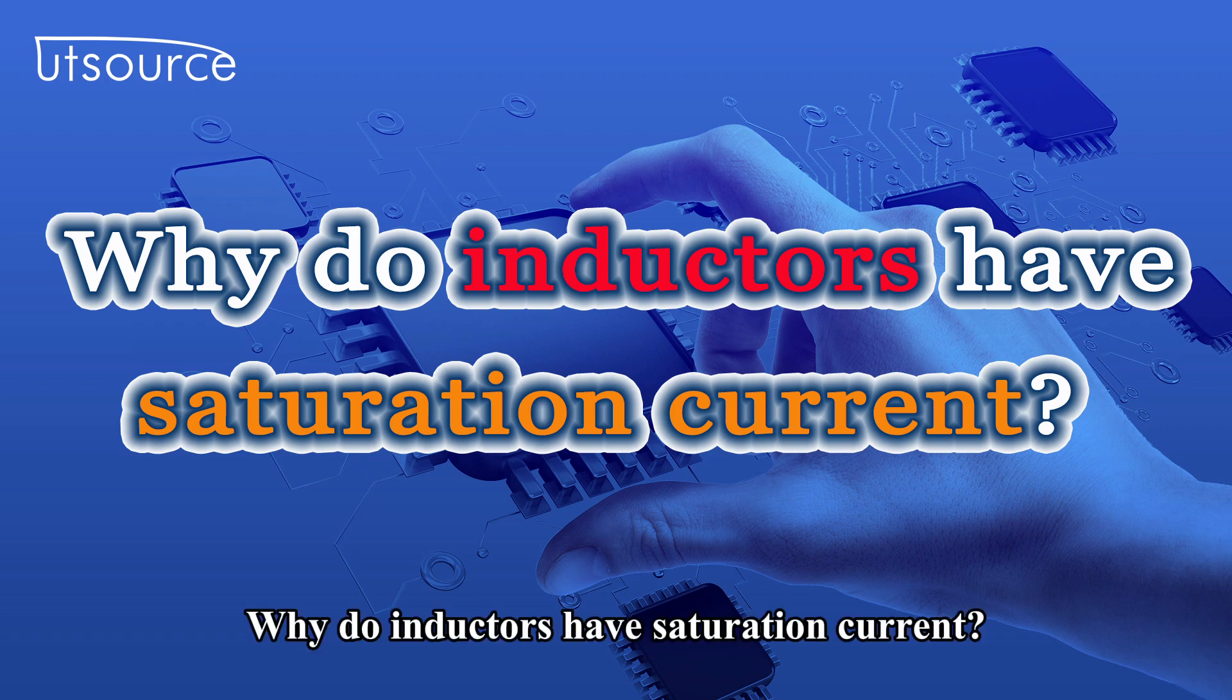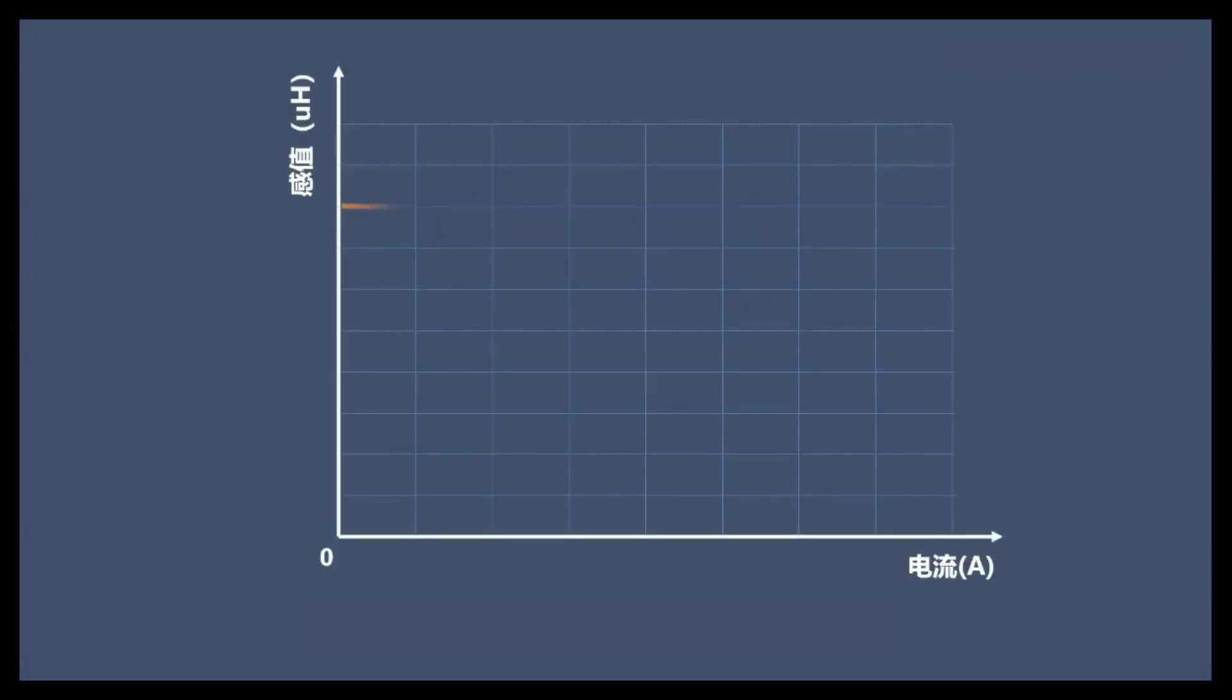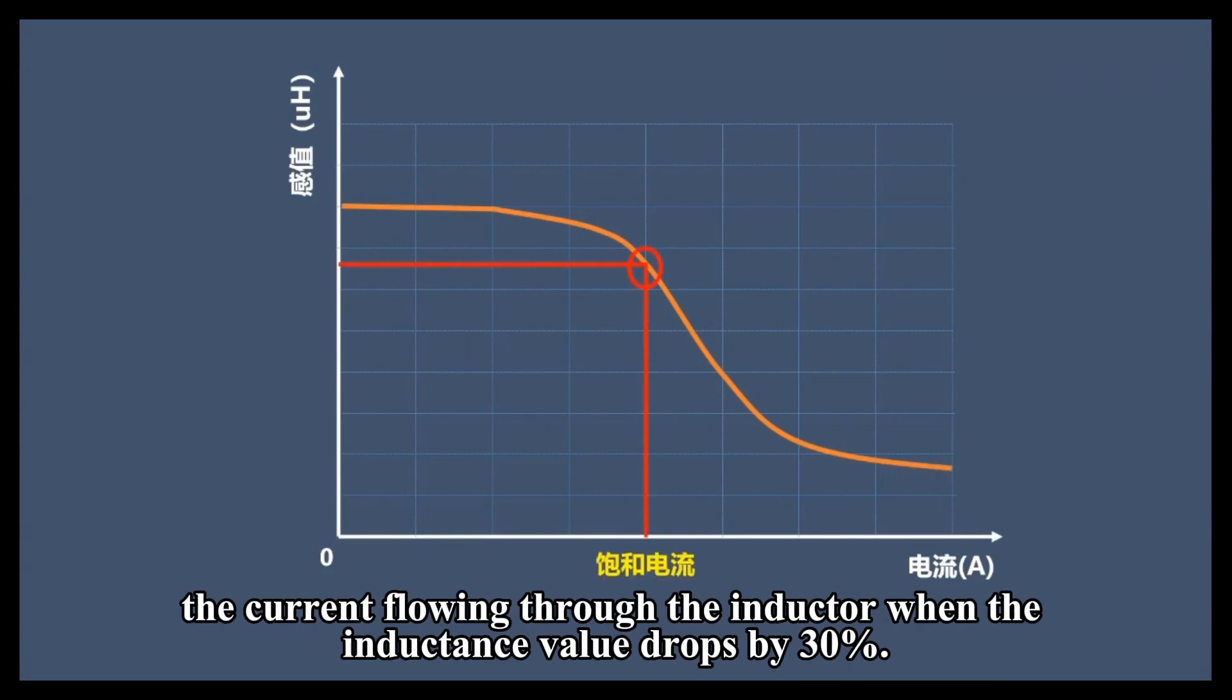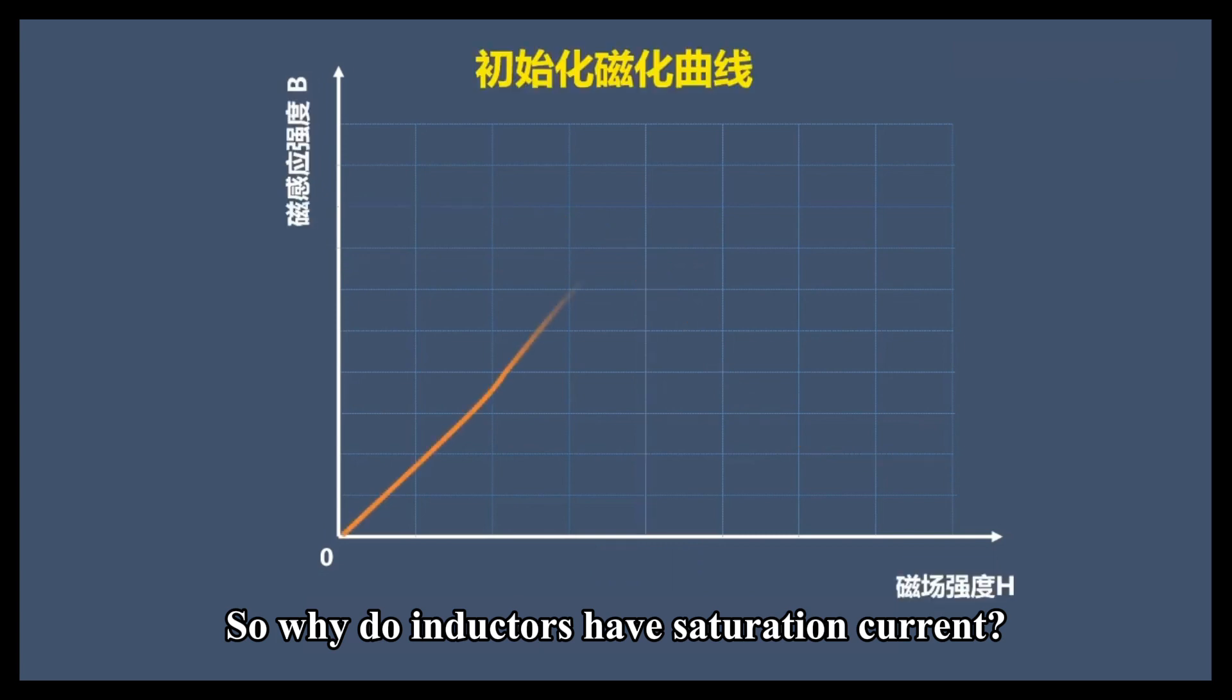Why do inductors have saturation current? An important parameter of an inductor is its saturation current. The definition of saturation current is the current flowing through the inductor when the inductance value drops by 30%. So why do inductors have saturation current?